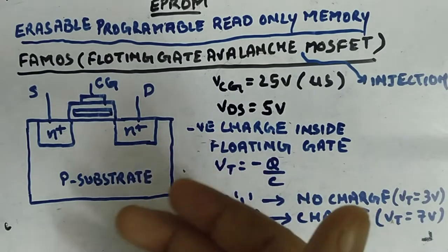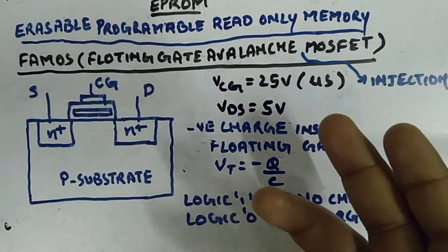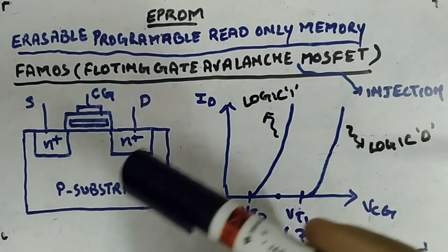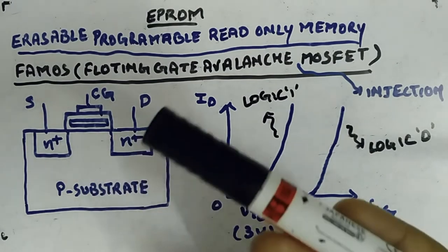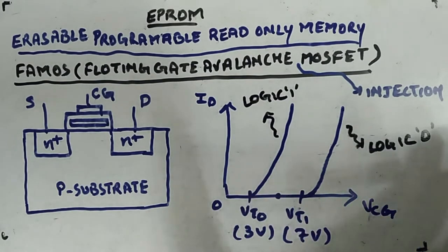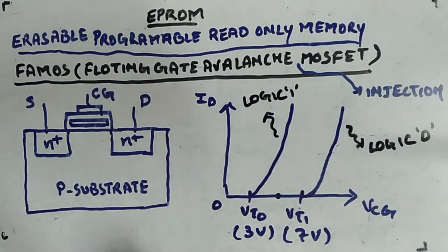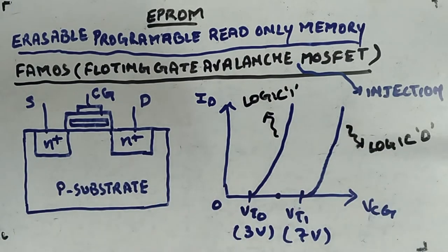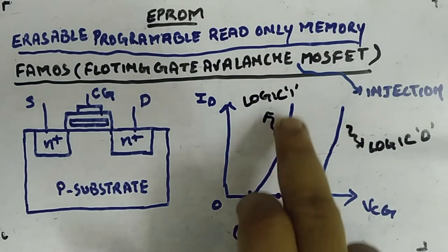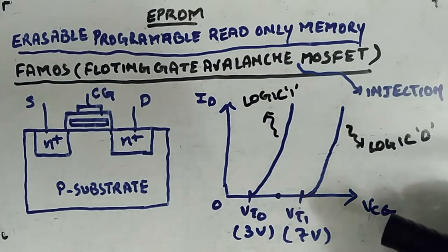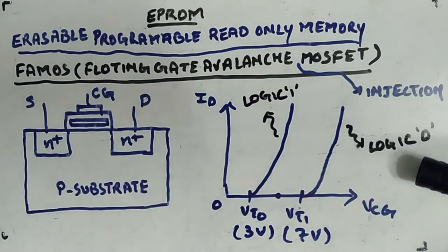Now, how to read this — once programmed, what voltages do you apply to determine logic 1 or logic 0? Consider a graph of control gate voltage versus current. There are two threshold voltages: VT0 and VT1, say 3 volts and 7 volts. 3 volts represents logic 1 and 7 volts represents logic 0 — because when charge is inside the floating gate, you represent logic 0.